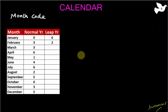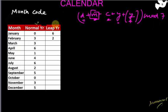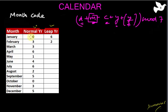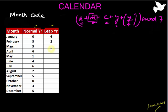The only slightly complicated part is the month code. There are two cases: normal year and leap year. For a normal year, the values are: January is 0, February is 3, March is 3, April is 6, and so on as shown in the table. For a leap year, January changes to 6 and February changes to 2; the rest of the codes remain the same — March is 3, April is 6, and so on. I'll give you a very simple way to remember these.